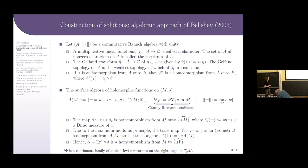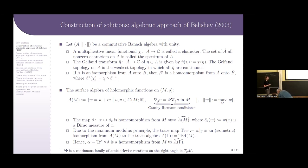Each element of A is realized as a function on A-hat by the following rule. This function is called the Gelfand transform of the element. There is the canonical Gelfand topology on the spectrum in which all Gelfand transforms are continuous. If the algebras A and B are isomorphic then their spectra are homeomorphic.